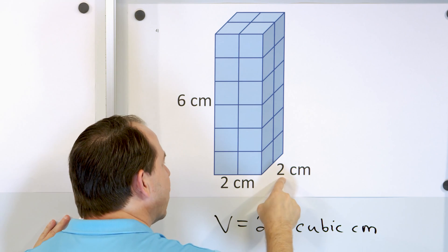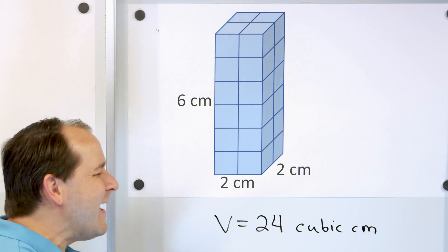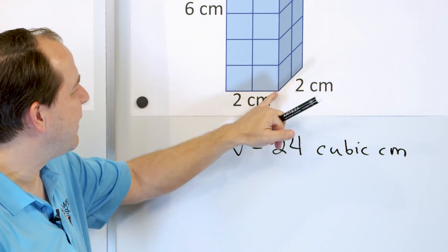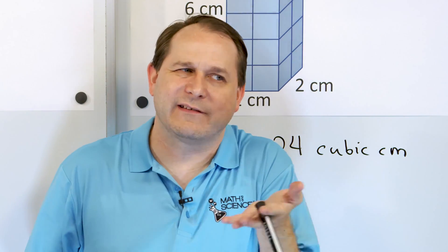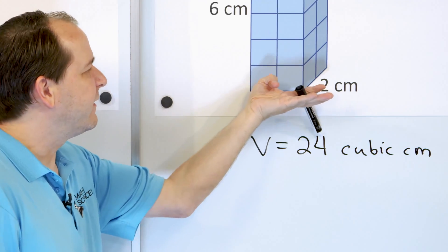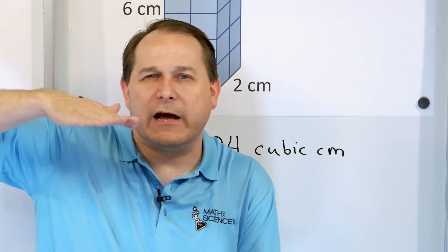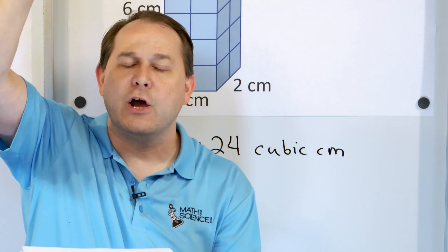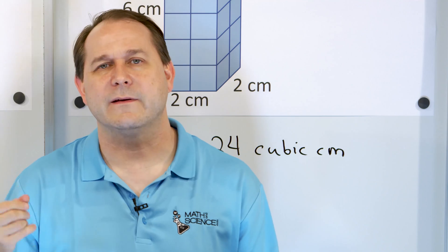Notice that two times two is four, and then four times six is 24 cubic centimeters. When we multiply length times width times height, what you're really doing is multiplying the base and getting the area of the bottom — because area is just length times width, and the bottom of these shapes are all rectangles or squares. When we multiply times the height, we're expanding in the vertical direction and figuring out how many cubes we have. That's why it's length times width times height.